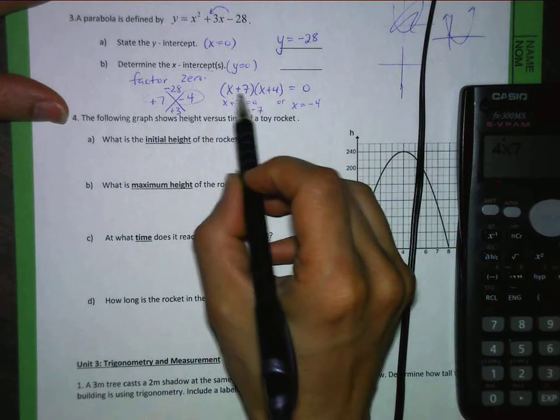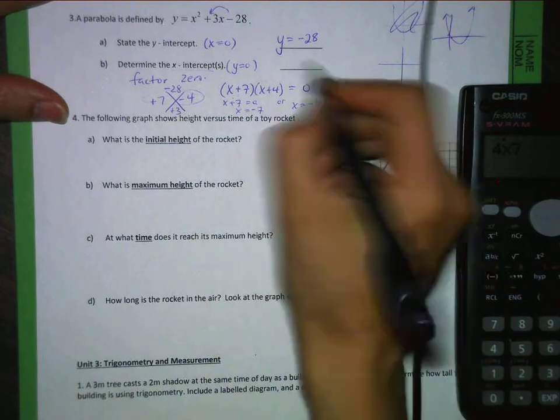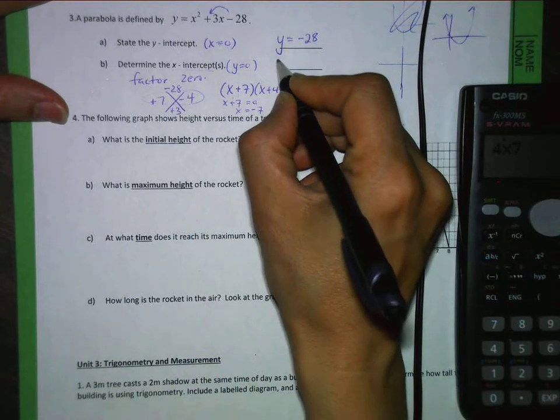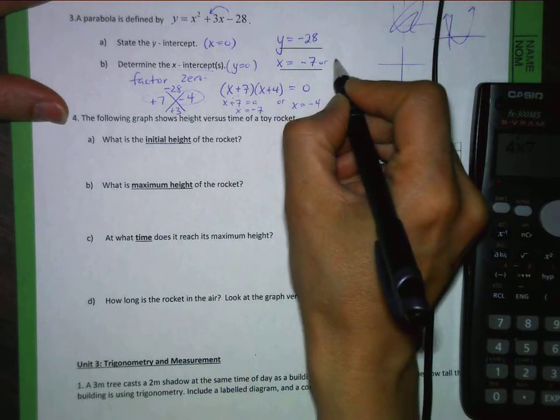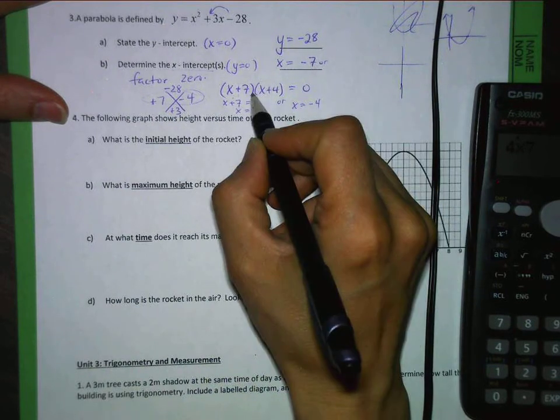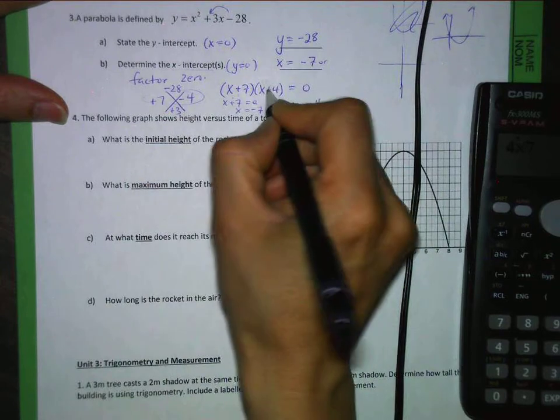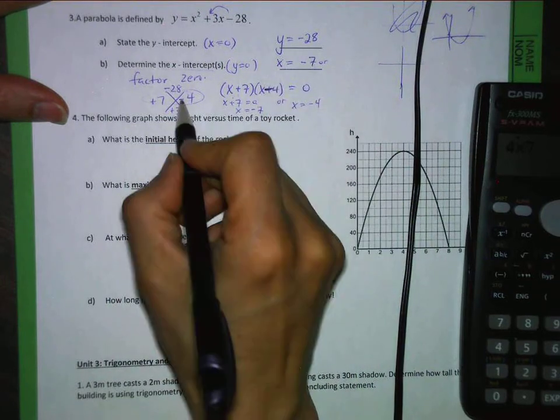x equals negative 7 or x equals negative 4. When we solve for that to set it equal to 0, it's always the same number but the opposite sign. So the x-intercepts are equal to negative 7 or, sorry, one of these is supposed to be, this is supposed to be negative 4 here. Negative 4. So then it would be negative 7 or positive 4.